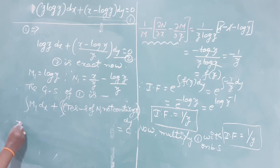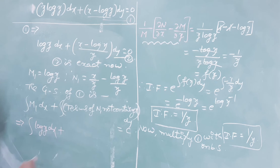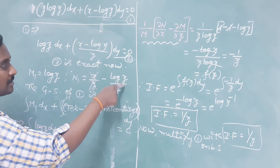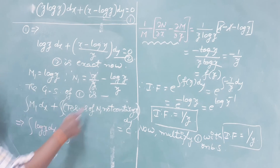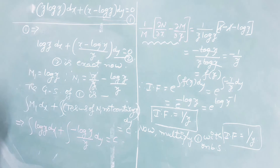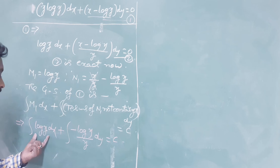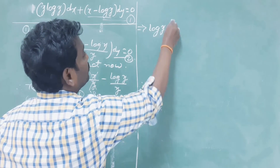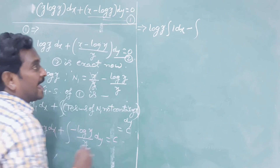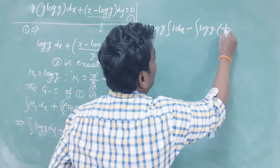Substituting: ∫log(y) dx plus, from N1, the first term x/y contains x so we skip it, and the second term -log(y)/y does not contain x so we take it: ∫(-log(y)/y) dy = c. Since log(y) is constant with respect to x, the first integral gives log(y)·x.